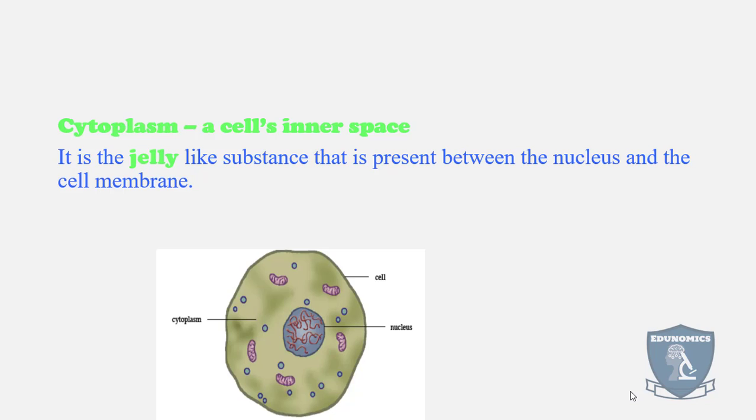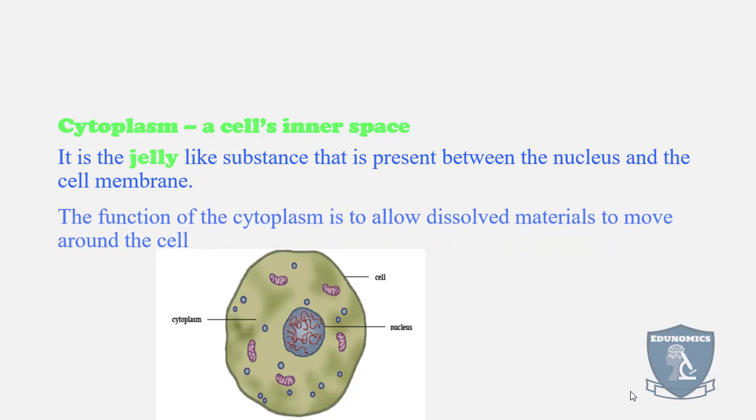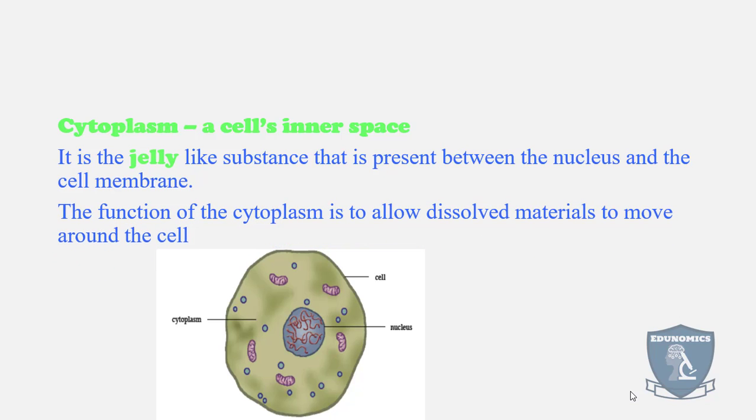As you can see in this example, the cytoplasm is that space surrounding the nucleus, but the cell membrane surrounds the cytoplasm, so it's the inside of the cell. The function of the cytoplasm is to allow dissolved materials to move around the cell, basically swimming through the cytoplasm.